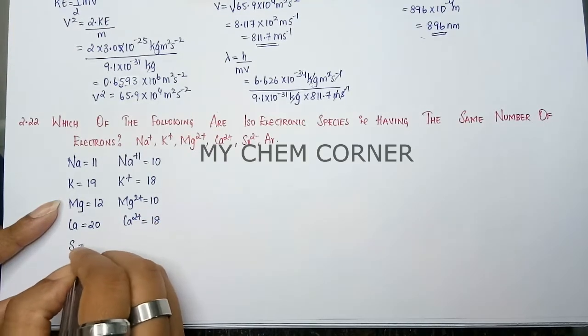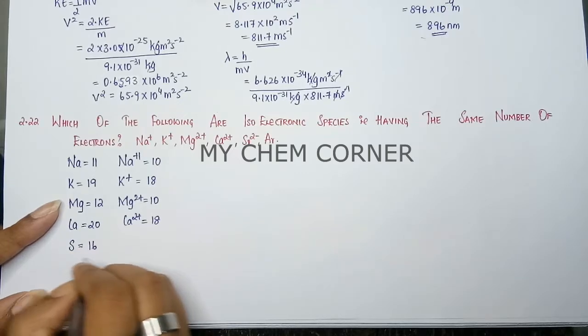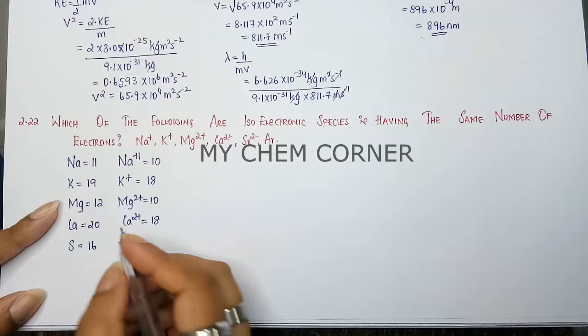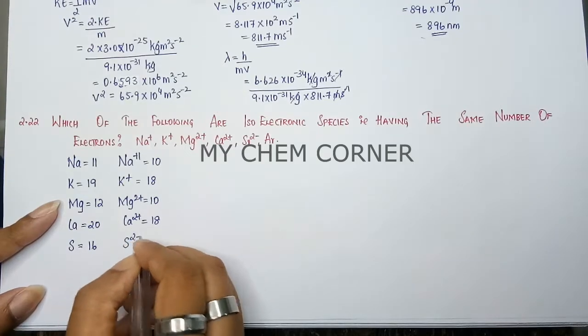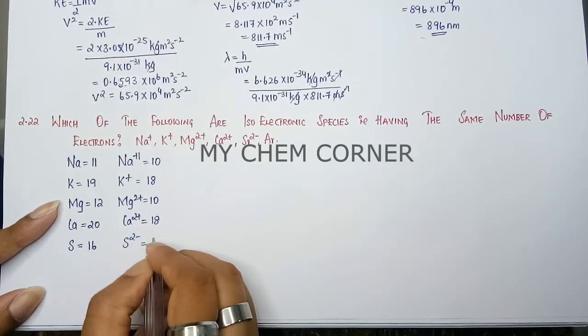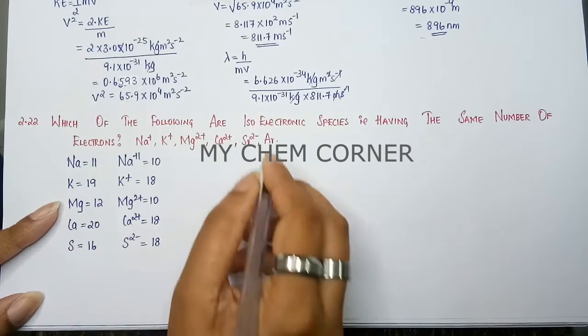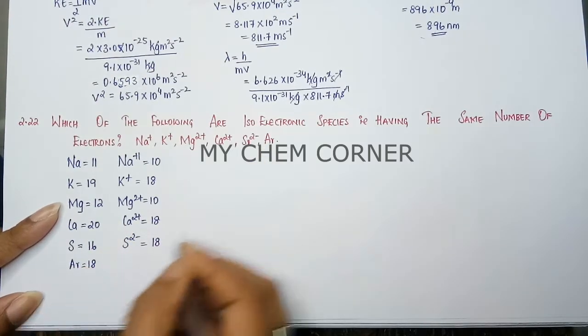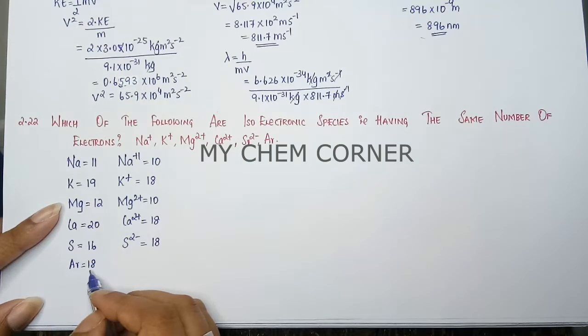Then I have sulfur, atomic number 16. But here it is given as 2 minus, which means gain of 2 electrons. So S2- with gain of 2 electrons will be 18. Argon is 18. Argon by itself is in the neutral state so it remains there.